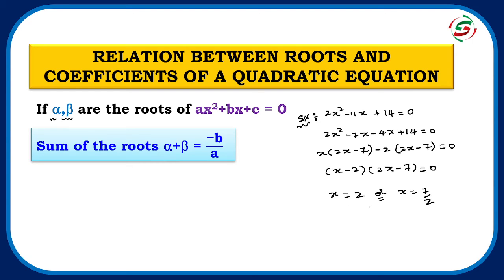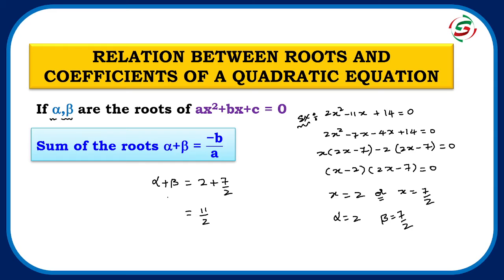So x = 2 and x = 7/2 are the roots of 2x² - 11x + 14 = 0. Taking alpha = 2 and beta = 7/2, we apply the sum of roots formula: alpha + beta = 2 + 7/2. Taking LCM and simplifying, that gives 11/2. So the sum of the two roots is 11/2.